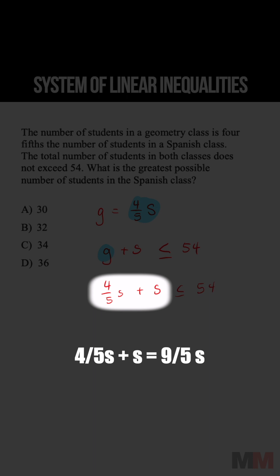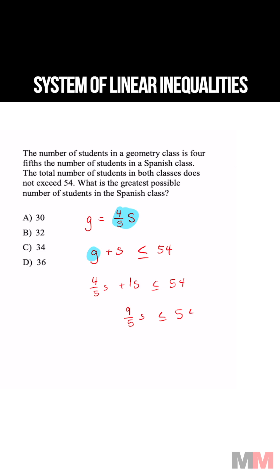Four-fifths s plus one s is the same thing as nine-fifths s less than or equal to 54. Multiply both sides by the reciprocal, and to do this without a calculator, just do 54 divided by nine, which is six. Six times five is 30.